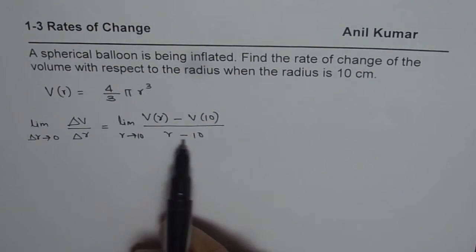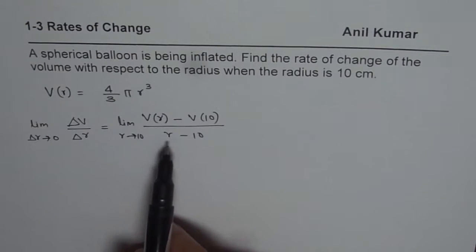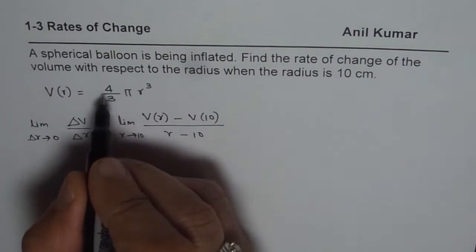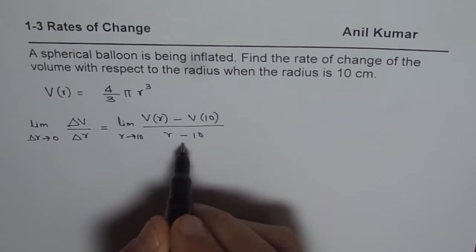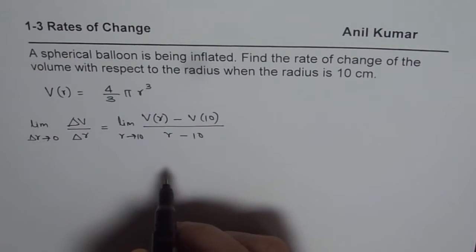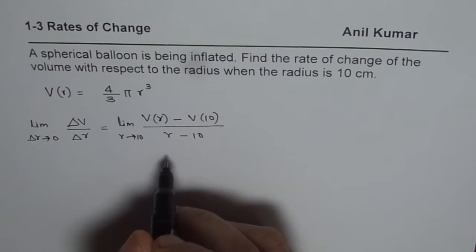You get the idea. When r approaches 10, then the difference is very small. At this stage, we can apply the formula and then factor. Whenever we apply this particular formula, then factoring is the key to solve the question.